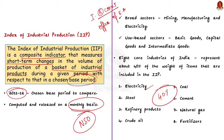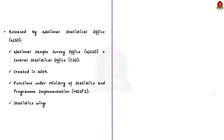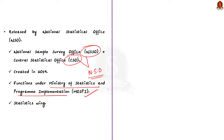IIP is compiled and published by the National Statistical Office. Until 2019, this index was released by the Central Statistical Office. From 2019, the Central Statistical Office and the National Sample Survey Office were merged to form the National Statistical Office (NSO). At present, NSO functions under the Ministry of Statistics and Programme Implementation and acts as a nodal agency for planned development of the statistical system in the country.